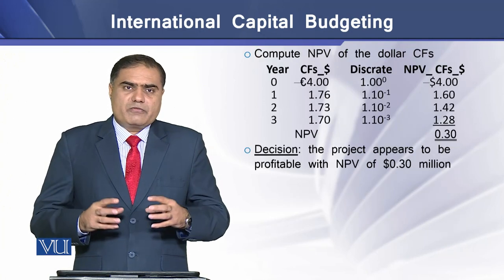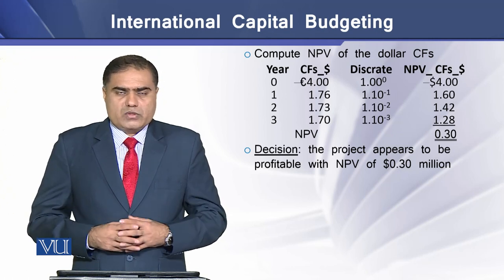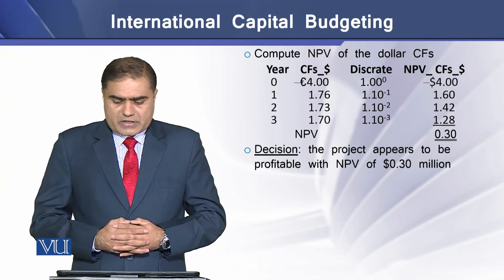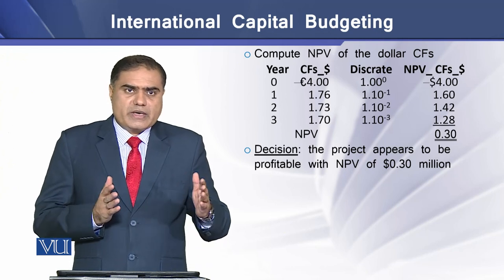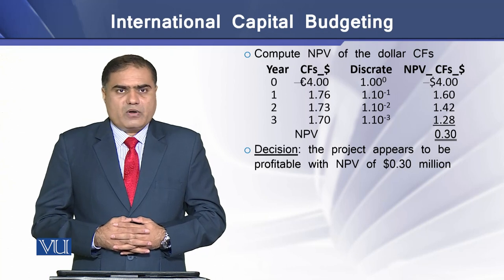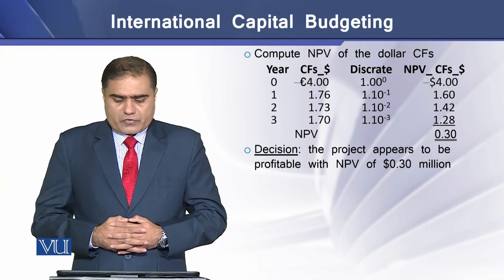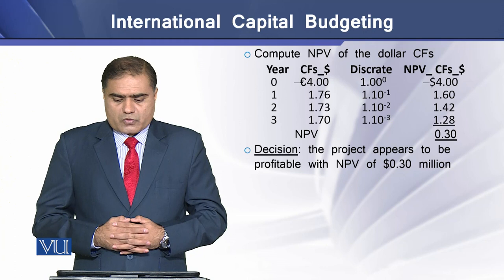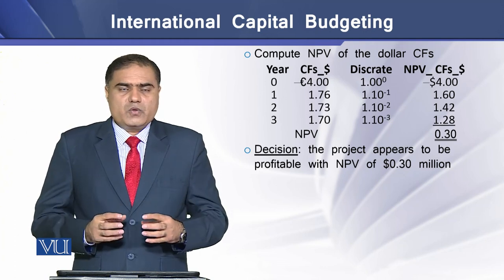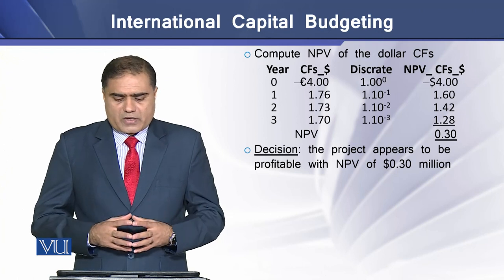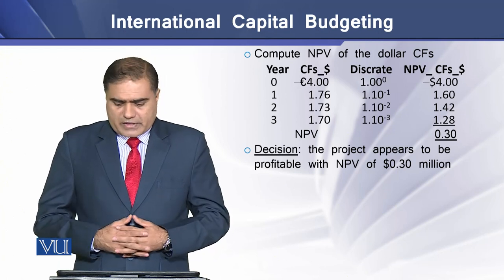With these computed annual cash flows, we determine the net present value by discounting them using the 10% discount rate. We compute the net present value equal to 0.3 million US dollars. As this value is positive, we can conclude that the project appears to be profitable, having a positive net present value.